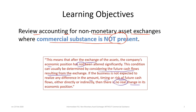The maintenance costs, insurance, and other cash flows associated with the truck won't be significantly different. However, exchanging a truck for an airplane would have completely different sets of cash flows — maintenance, insurance, and so on. In situations like that, we would anticipate commercial substance would be present.